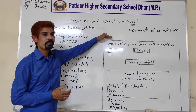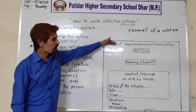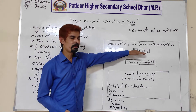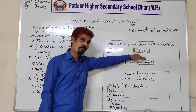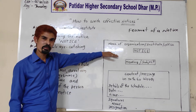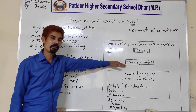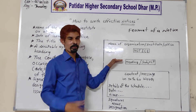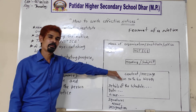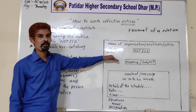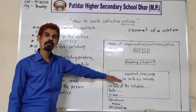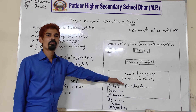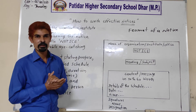Now let's look at the format of a notice. At the top, write the name of the organization, institute, or office. Then write the title 'NOTICE' in capital letters. Here you will write the date. Then write the heading or subject — that should be eye-catching, meaning तुरंत समझ में आने वाला — किस चीज़ के ऊपर notice लिखावाई. Then write the content or message — notice किस बारे में लिखा जा रहा है. It should be in 30 to 60 words. There is a word limit — इसे 30 to 60 words तक रखने की कोशिश करें.